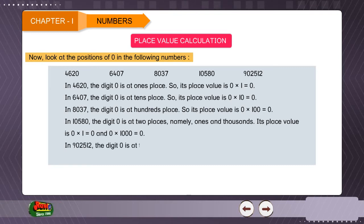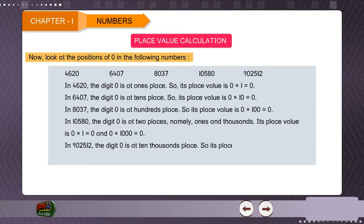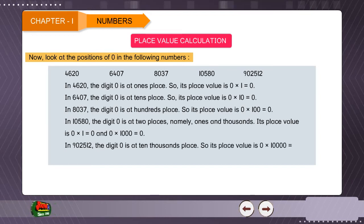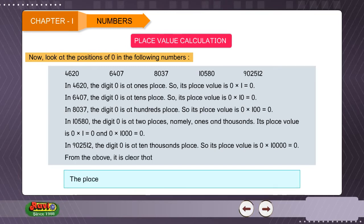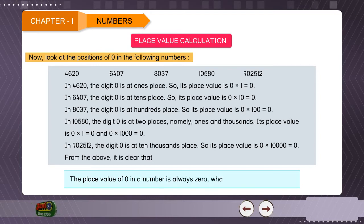In 9,92,512, the digit 0 is at the 10,000's place, so its place value is 0 × 10,000 = 0. From the above, it is clear that the place value of zero in a number is always zero, whatever its position may be.